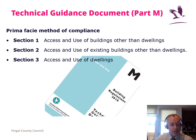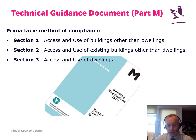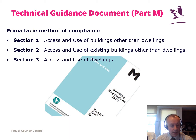You have BS 8300:2018, which is the code of practice for design of accessible and inclusive built environments. You also have the universal design suite of documents called 'Building for Everyone'.